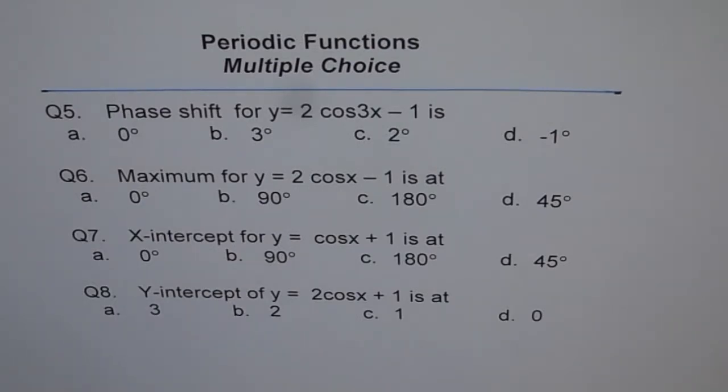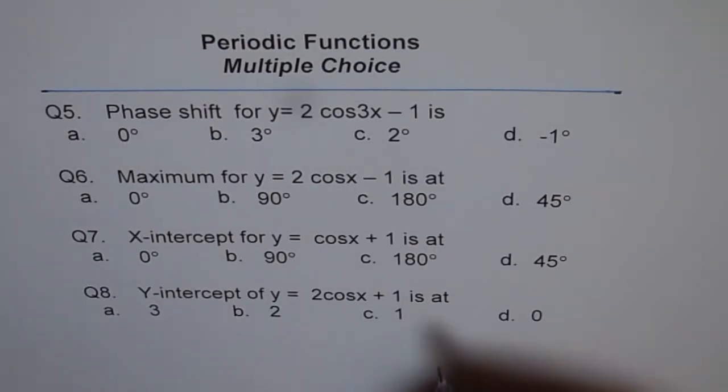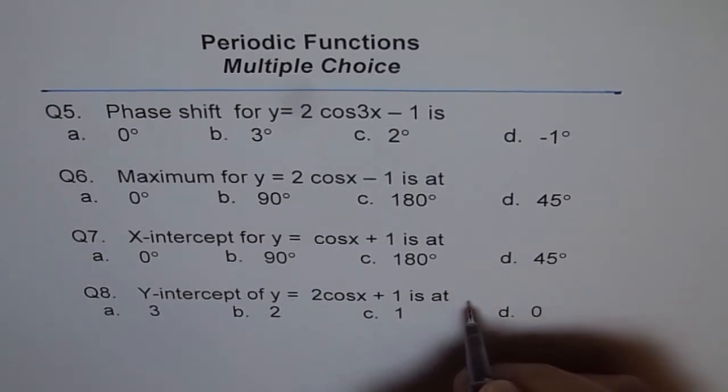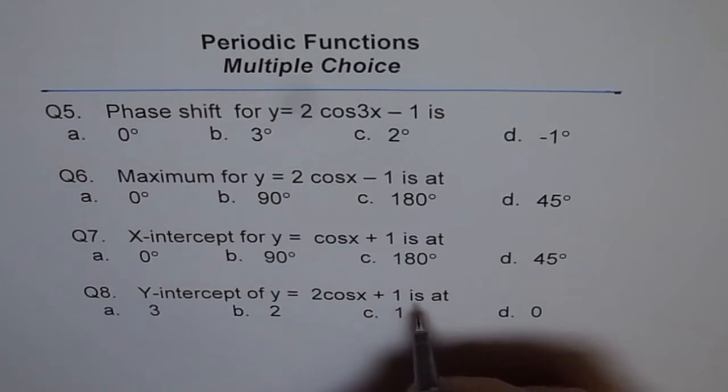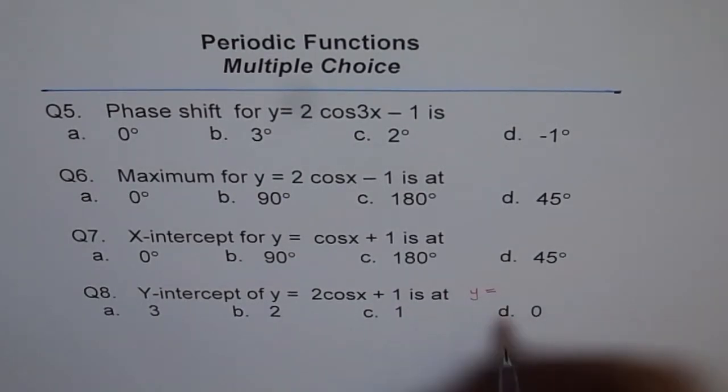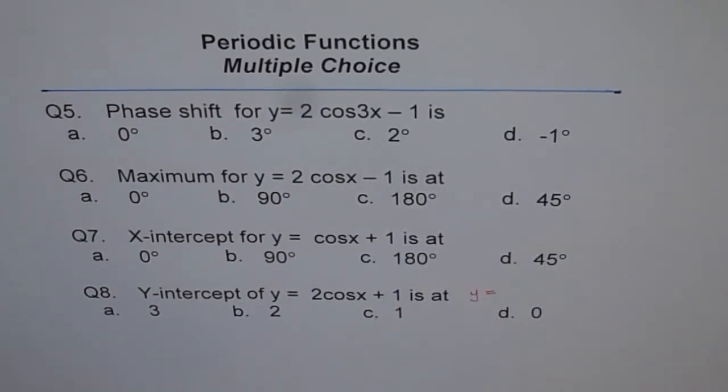Question 8. Y intercept for y equals 2 cos x plus 1 is at 3, 2, 1 or 0? Okay, let me make it is at. So y intercept is always at x equals 0. But what is the y value? Is it y equals to what? Let me write that.